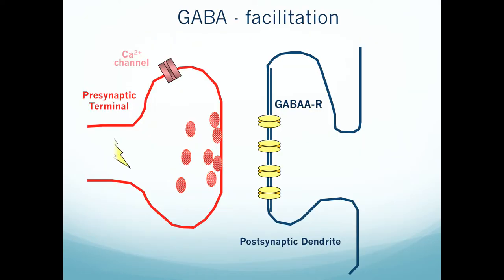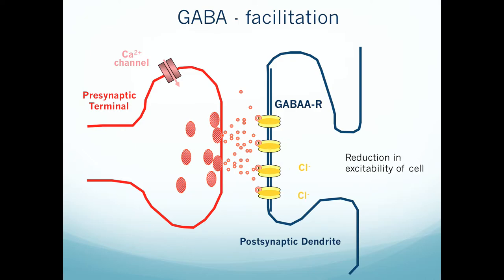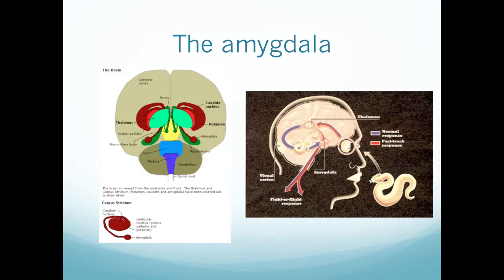The main site of action is believed to be in the limbic system structure called the amygdala. There are two amygdalae in neurotypical brains — amygdala is Latin for almond. They look like two little almonds and feed forward into corpus striatal structures. The amygdala is important for fear processing.